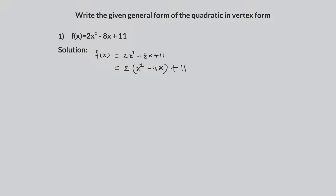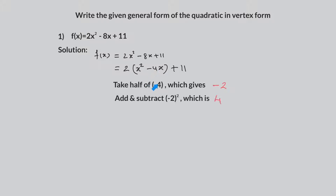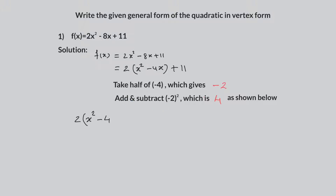Now, we complete the square for the terms in the parentheses by taking half the coefficient of x, which is half of negative 4, which gives negative 2. We then add and subtract the square of negative 2, which is 4, as shown here.